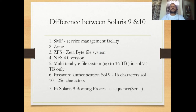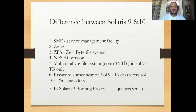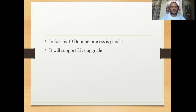The differences between Solaris 9 and Solaris 10 include: SMF — Service Management Facility — zones, ZFS, and NFS version 4. Multi-terabyte file systems are supported up to 16 TB. Password authentication in Solaris 9 was limited to 16 characters, but now with advanced security you can go up to 256 characters. In Solaris 9, the boot process is sequential and therefore a bit slow, while in Solaris 10 the boot process is parallel, making it faster.